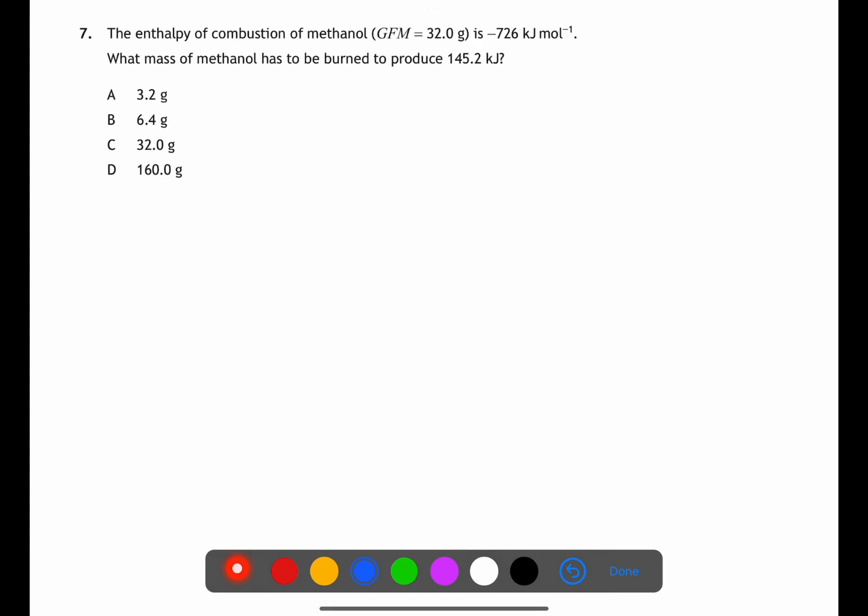For question seven we're looking at an enthalpy calculation. You're given the enthalpy of combustion of methanol and the gram formula mass. We have been told that methanol has been burned to produce 145.2 kilojoules.